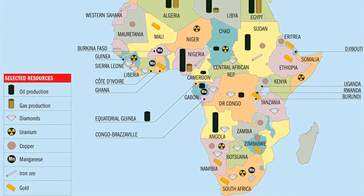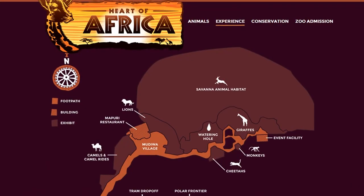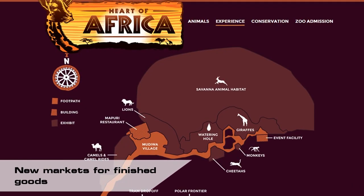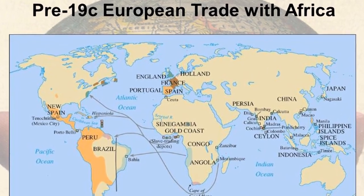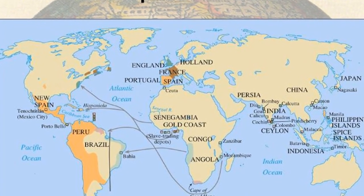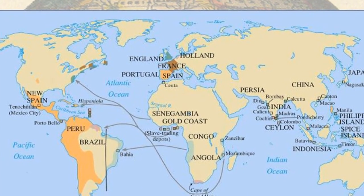Two: new markets for finished goods. Long the industrial powerhouse of the world, Europeans would import raw materials and natural resources from their colonies, process and manufacture them, and resell the finished goods back to settlements in the colonies.